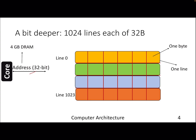Let's take an example. If your processor is sending a 32-bit address, assuming we have a 4GB DRAM, and let's assume we have a cache of 1024 lines where each line is 32 bytes. So we have 2 to the power of 10 lines, each line is 32 bytes — that makes it a 32 KB cache.